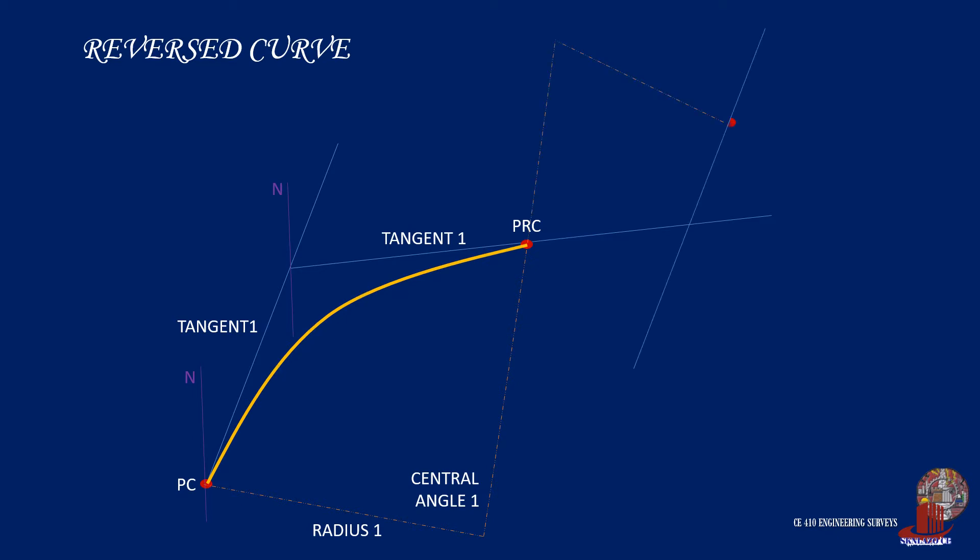A reverse curve comprises of two or more simple curves, but the distinction of reverse curves from compound curves is the location of their centers of curvature, which would be at opposite sides of the curves.